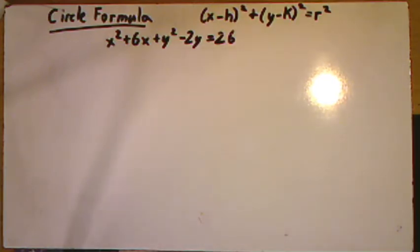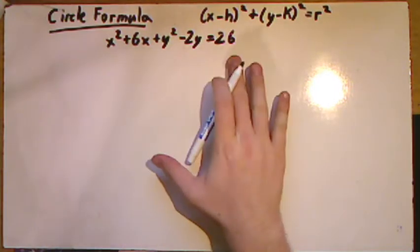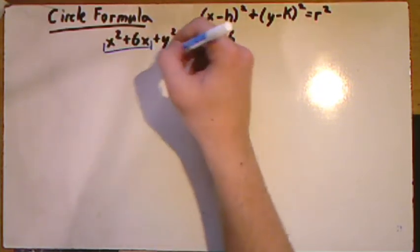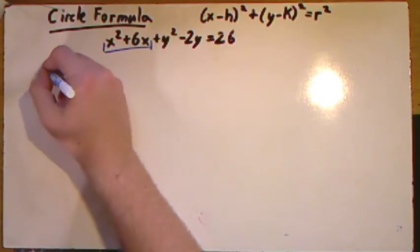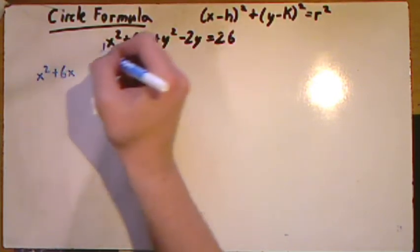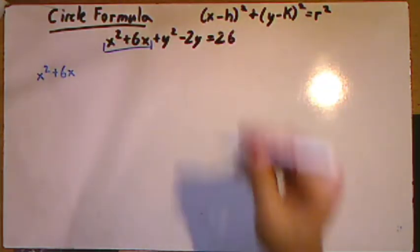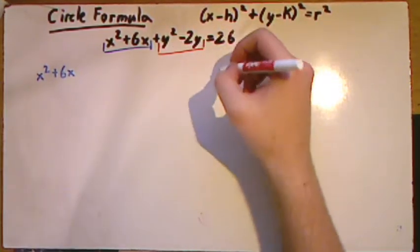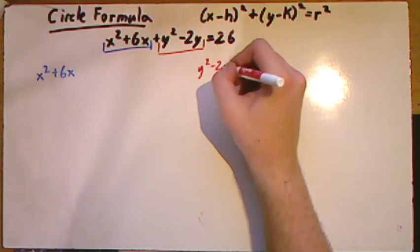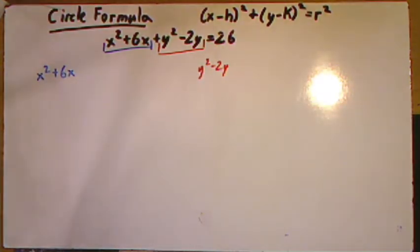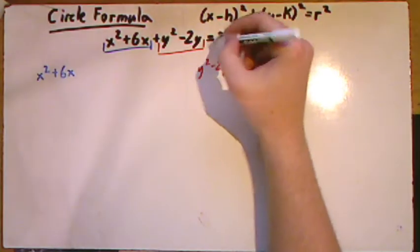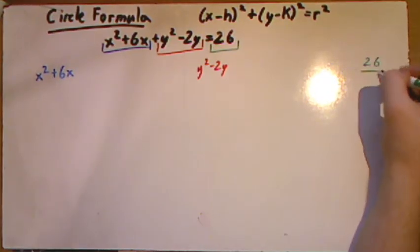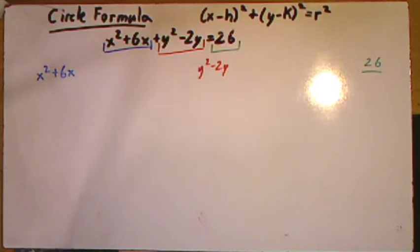So, the first thing we need to do is separate this equation into three different parts. We have the parts that have an x in it, so these are going to be our x values. We have the parts of our graph that have our y values in it, so that'd be the y squared, the negative 2y. We're going to set that up over here, and we're going to section off this 26 because we just want to make sure we don't touch it.